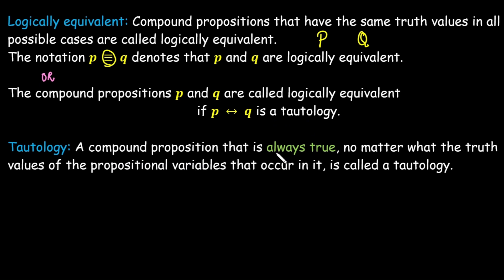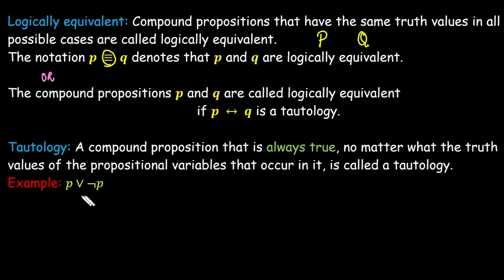Before coming to that definition, we need to know what a tautology is. A compound proposition is called a tautology if it is always true, no matter what the truth values of the propositional variables are. When you construct its truth table, the result column contains only true values, regardless of whether the individual propositions are true or false.